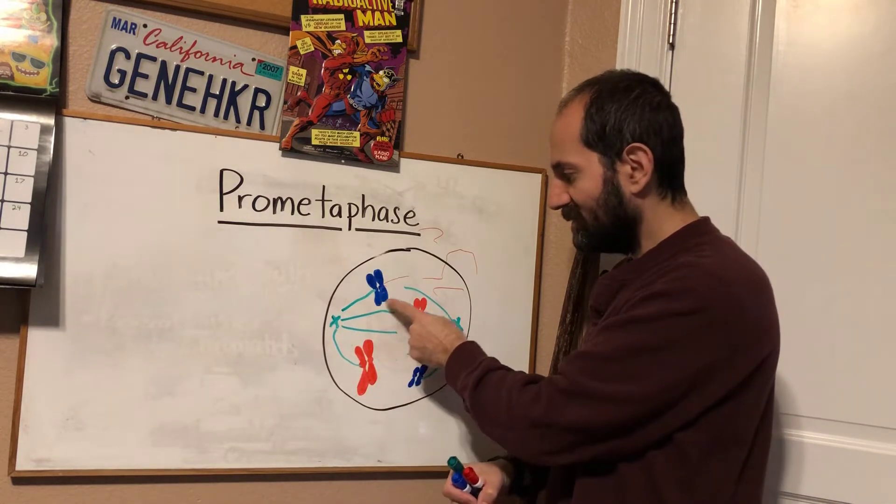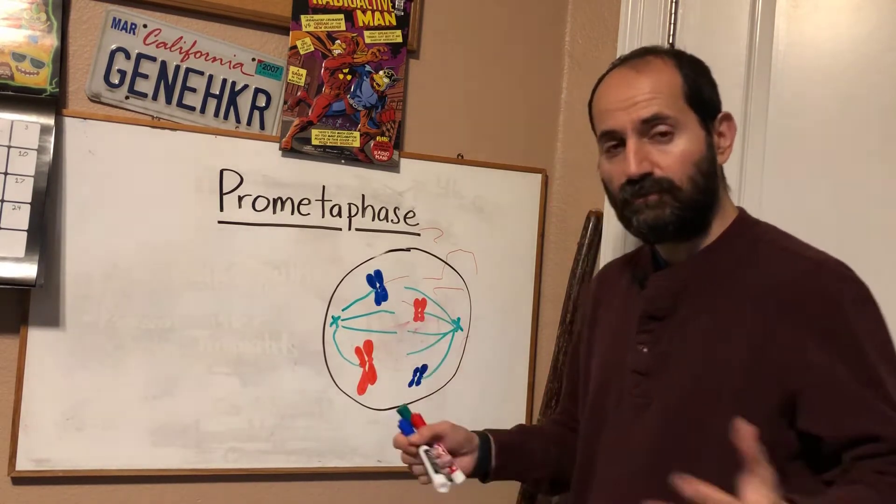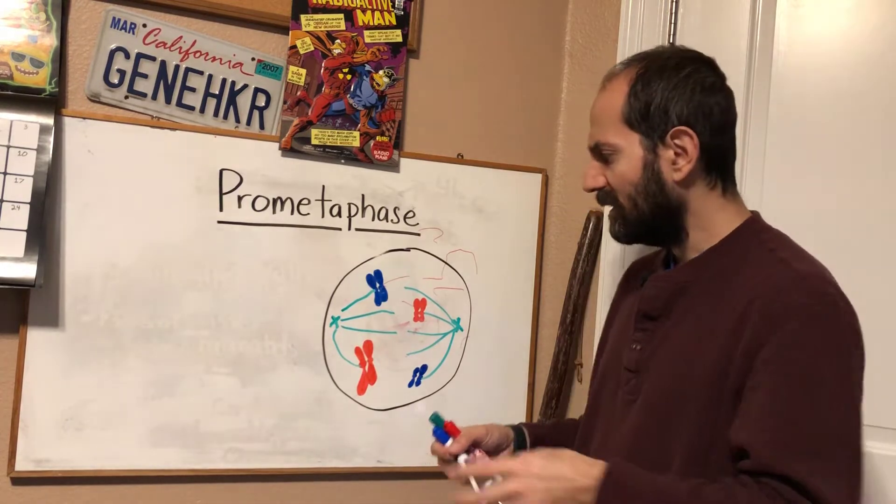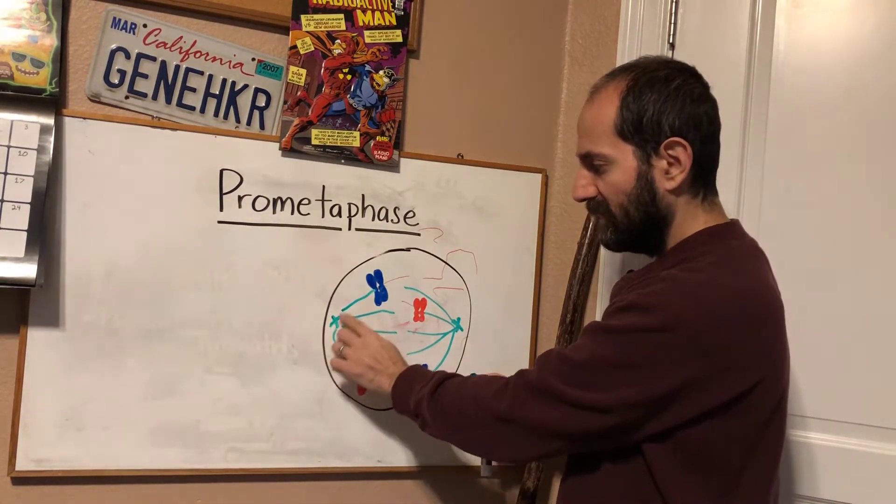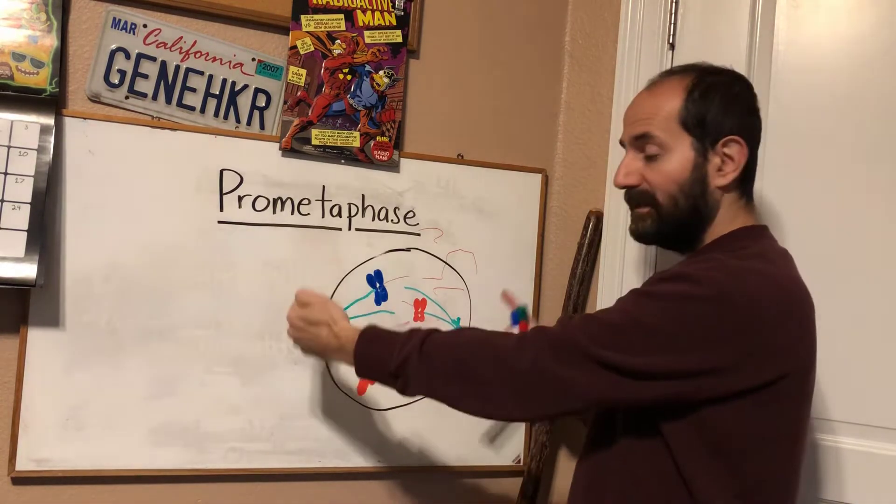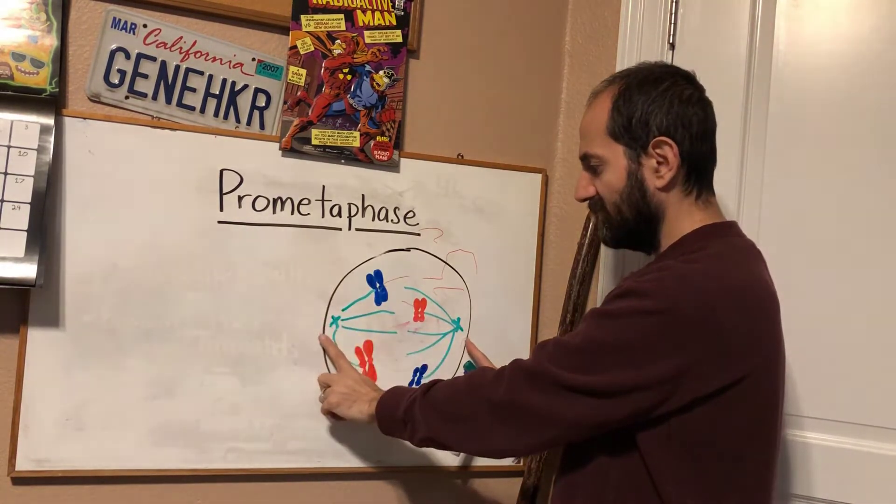So you know what that means. The sister chromatid pairs are now floating around in the cytoplasm. And not only that, notice that these centrioles, the pairs of centrioles are now at opposite ends of the cell. They're at opposite poles of the cell.